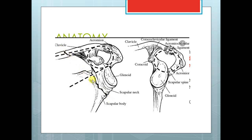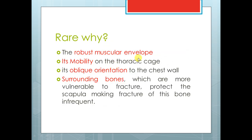If you have a double fracture, this is a floating shoulder and you have to fix one — this is one of the indications for fixation. This fracture is actually rare. Why? Because a lot of bulky muscle surrounds this bone, high mobility, oblique orientation, and a lot of bone surrounds it, which is more susceptible for injury rather than the scapula itself.